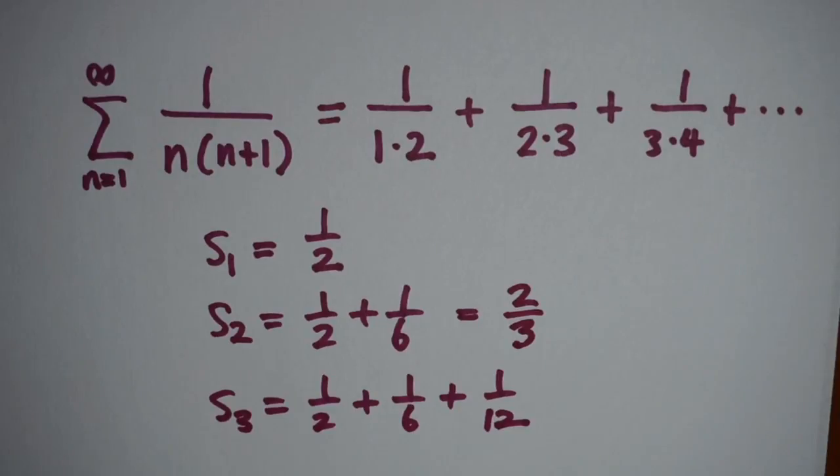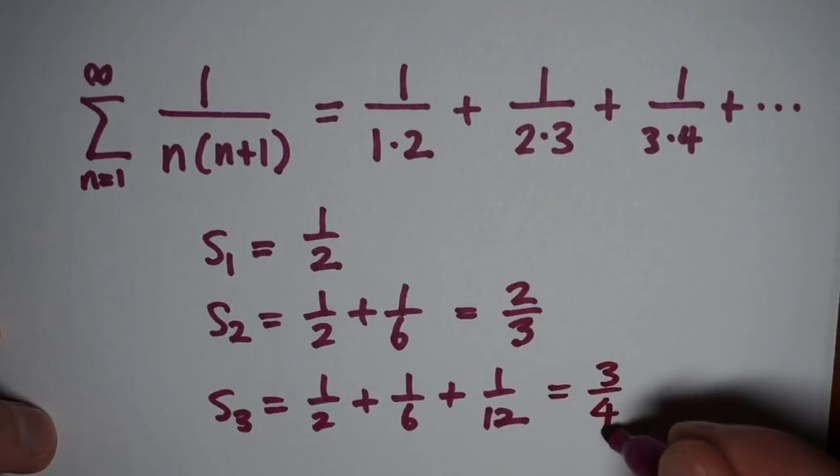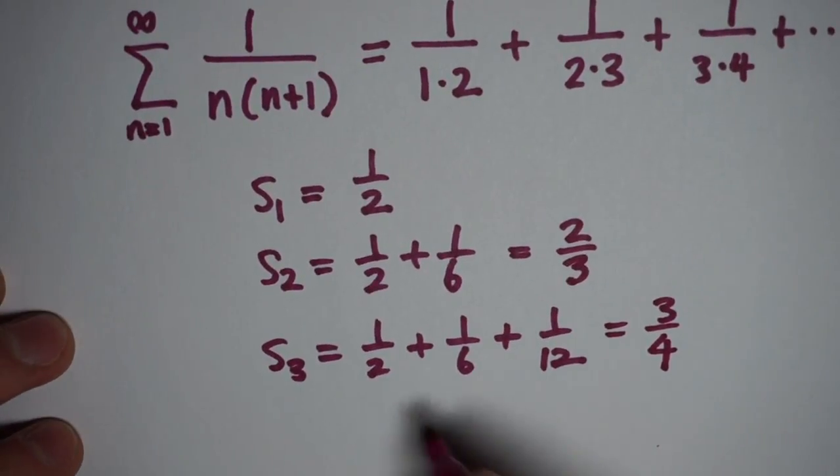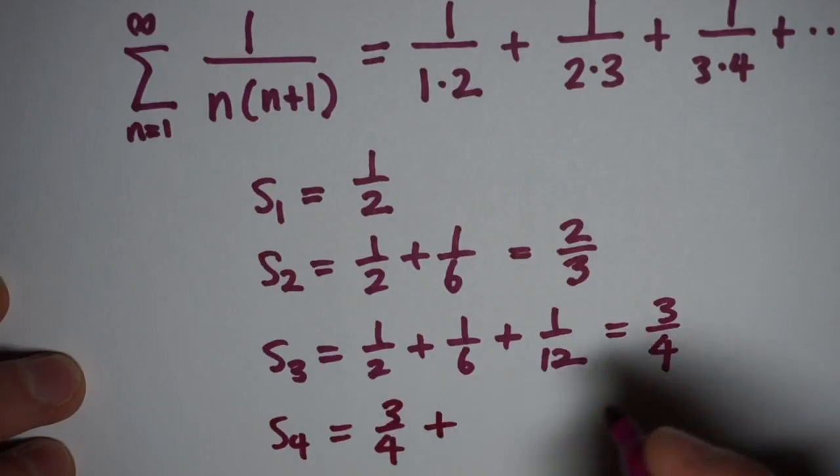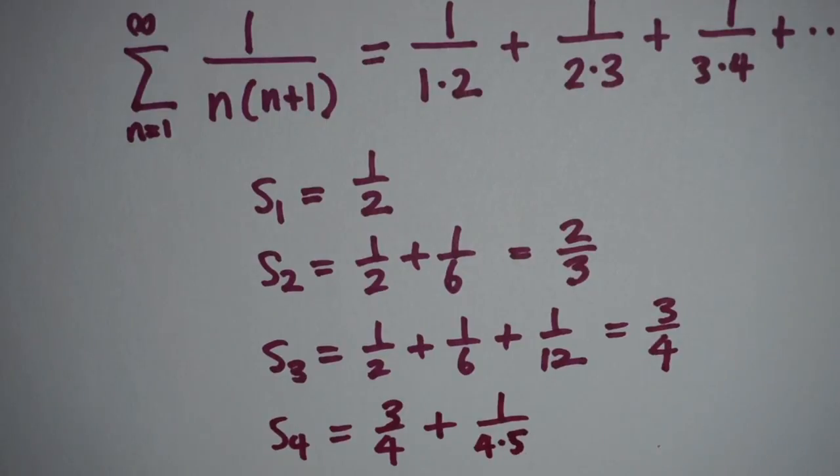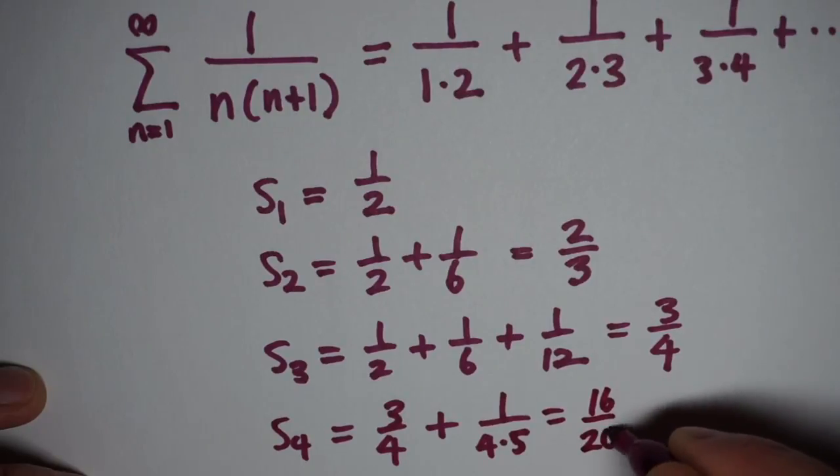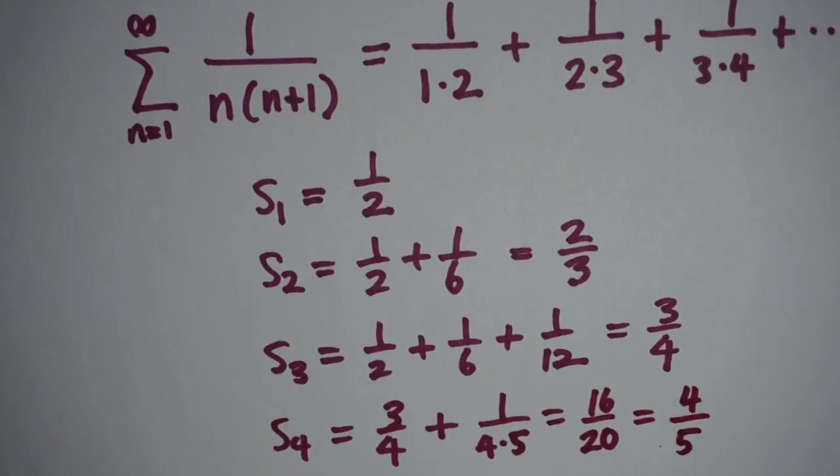A half plus a sixth is two-thirds. A half plus a sixth plus a twelfth will be two-thirds plus a twelfth, which is going to be three-quarters. If we write down the next one, S4 is going to be three-quarters, that's S3, plus the next term, which will be one over four times five. So three-quarters plus one over 20 is going to be 16 twentieths, which is the same as four-fifths. And so we can see a nice pattern happening here.